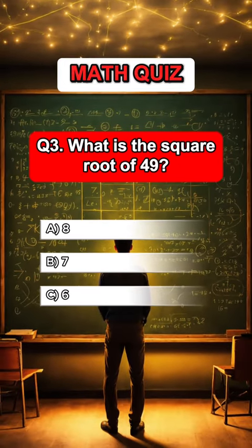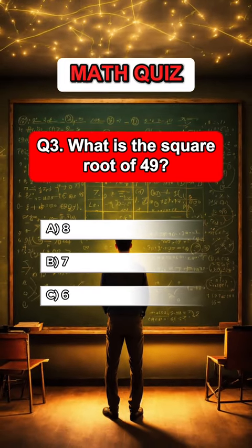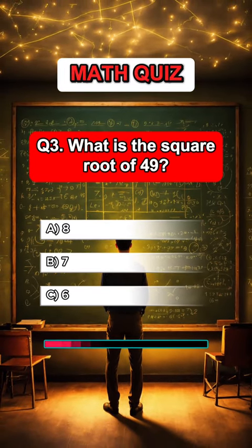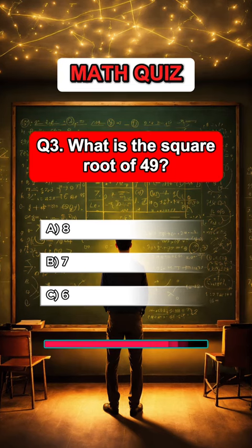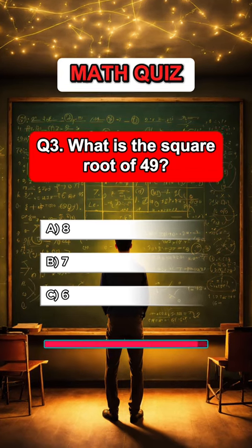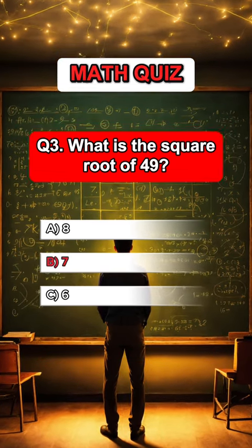Question 3. What is the square root of 49? Answer B, 7.